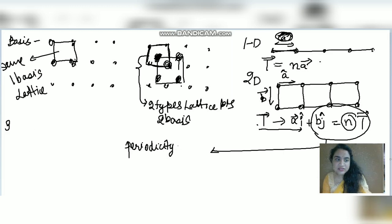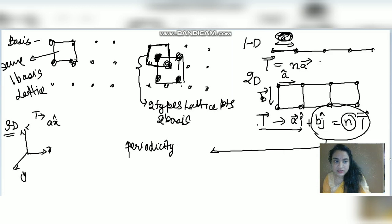In a three-dimensional lattice, we have three unit vectors x, y, and z, and the translation vector T = ax + by + cz. This translational vector, applied in different crystal systems — both 2D and 3D — forms what are called Bravais lattices.